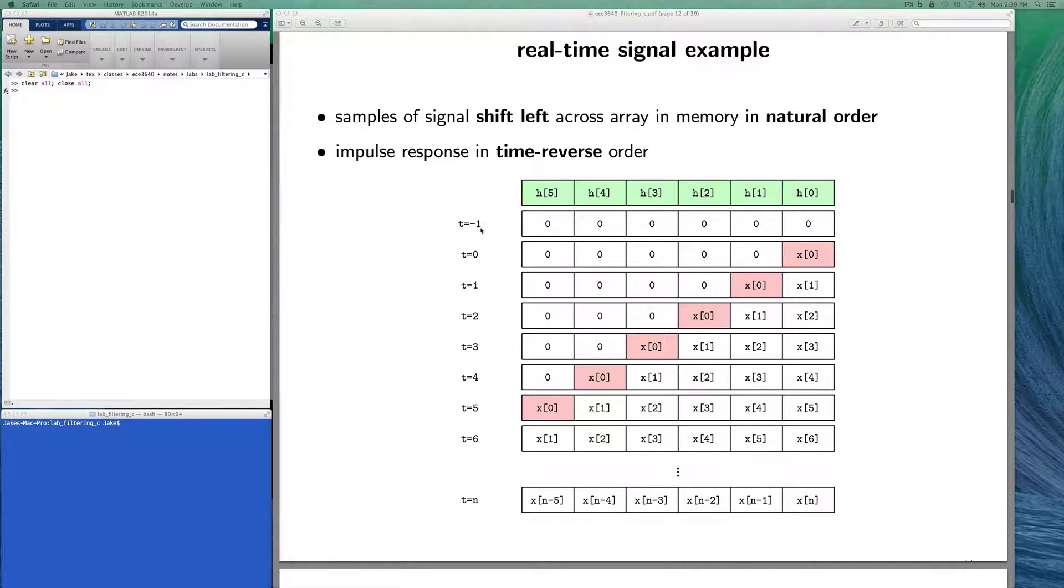At time minus one, before we shift any data into our array, the array is initialized to be all zeros. Then at time zero, the first sample shows up. I've colored the first sample in red so we can keep track of it as it shifts across the array. Notice here that at time zero, if we multiply the impulse response coefficients with the values in the data buffer, we'll have h0 times x0, and that's the value that ends up in the first sample of the output, y0.